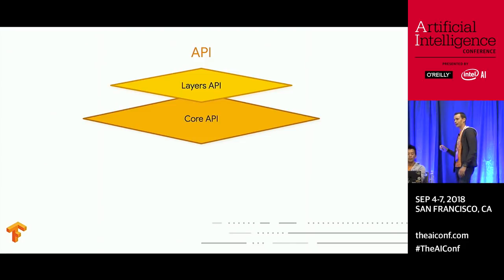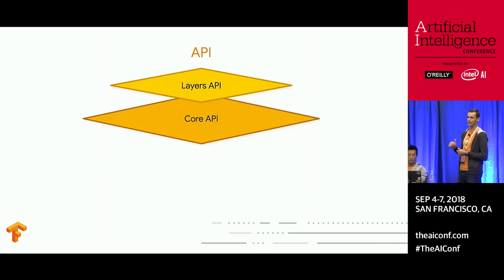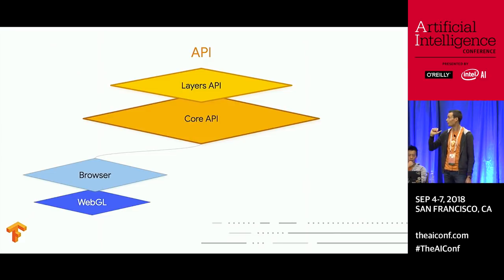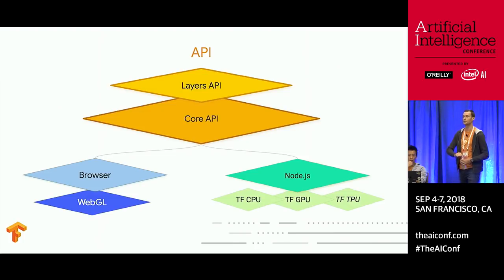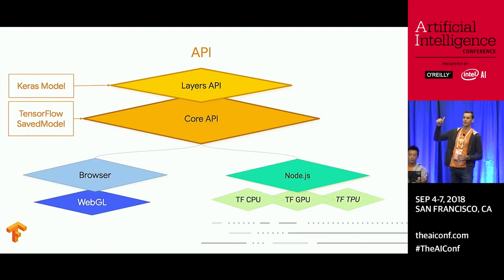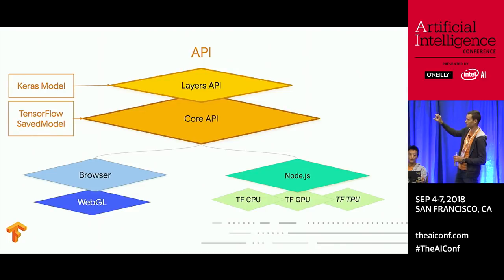There are two main components to TensorFlow.js: a core API and a layers API. In the browser, both are powered by WebGL — we bootstrap all the linear algebra through WebGL textures. On the server side, we ship the same C code that powers TensorFlow Python, giving you high-end CPU, GPU, and eventually TPU integration. The layers API is almost identical to Keras with very similar syntax, while the core API is our op-level API, similar to TensorFlow saved models.